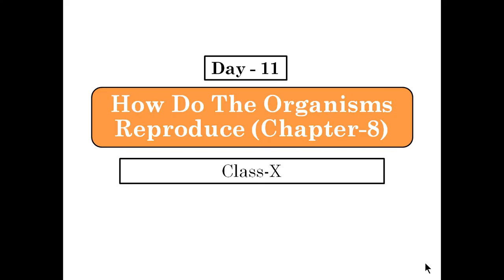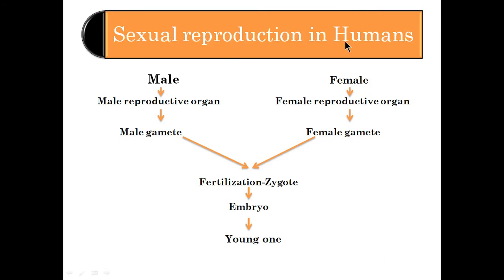Hello everyone, students. It's day 11 and today we are going to discuss a very important topic from this chapter — sexual reproduction in humans. Sexual reproduction is the process of giving birth to young ones by the fusion of gametes produced by both sexes. The male reproductive organ and female reproductive organ produce male gametes and female gametes. During fertilization they fuse together, produce a zygote, which results in an embryo, and a baby is born.